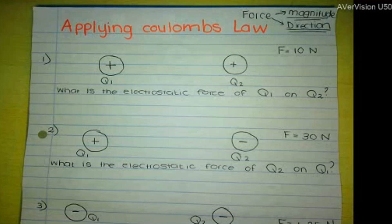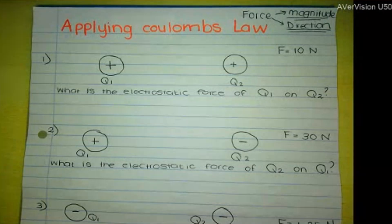The electrostatic force exerted by one charged body on another charged body can be represented by F, and F is equal to KQ1Q2 over R squared.